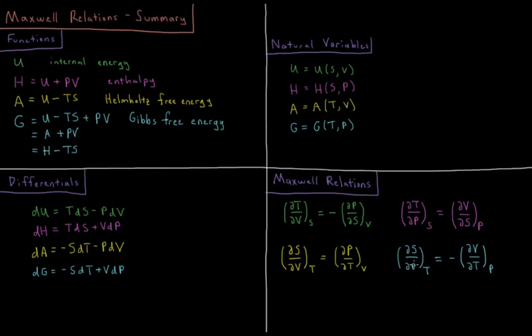Similarly, for the pressure dependence of an ideal gas, the volume of that ideal gas is going to be nRT over P. That derivative with respect to temperature is nR over P. So minus nR over P is the derivative of entropy with respect to pressure for an ideal gas.